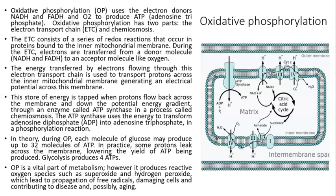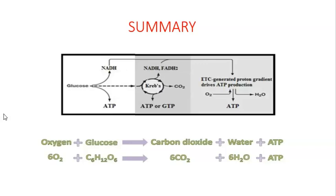Oxidative phosphorylation is a vital part of metabolism. However, it produces reactive oxygen species such as superoxide and hydrogen peroxide, which lead to propagation of free radicals, damaging cells and contributing to disease and possibly aging.